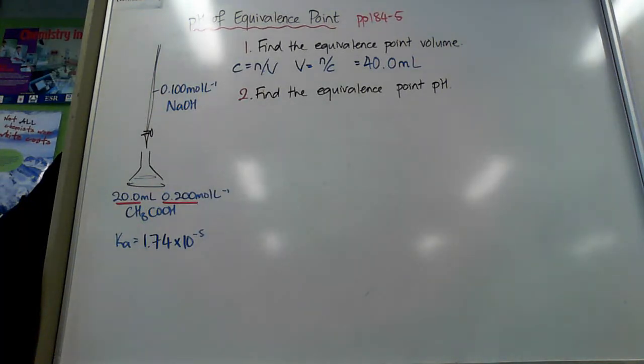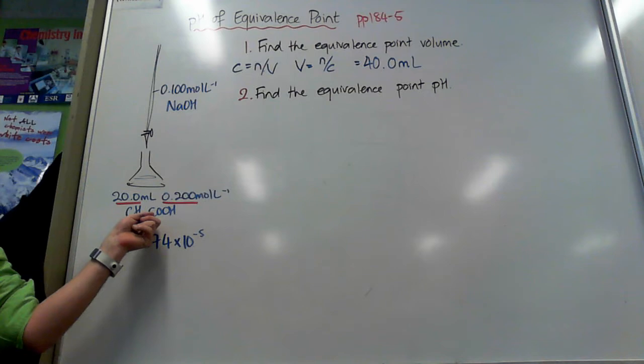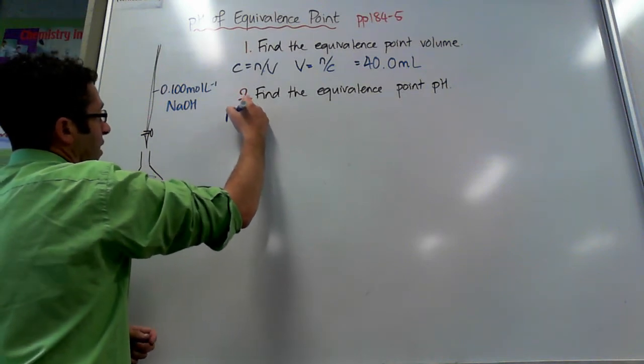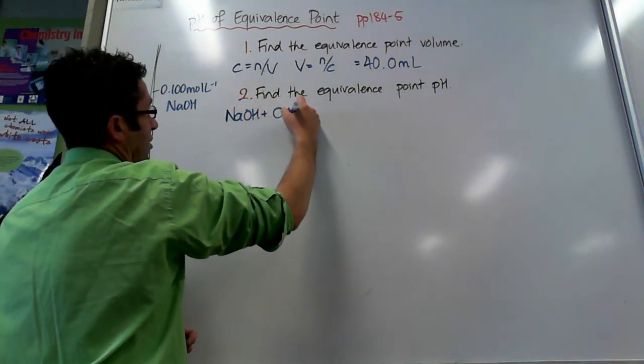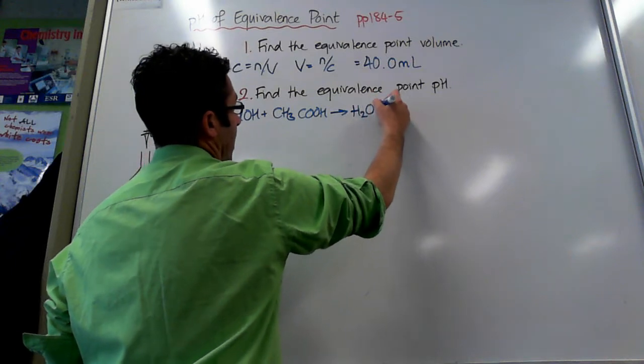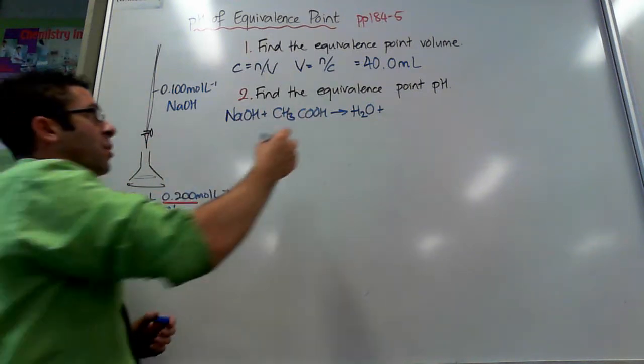Then I get to the hard question, find the equivalence point pH, and this is really quite full on. So what I want to do is break it down to where do I start. I always start with a balanced equation. I need to know what this reaction is. Now it's making an aqueous solution, so there'll be something else happening. So sodium hydroxide is reacting with ethanoic acid, an acid-base reaction or neutralisation. So I should have NaOH plus CH3COOH going to its neutralisation, so it must make water. That leaves NaCH3COO, so it makes sodium ethanoate.